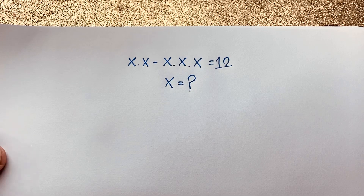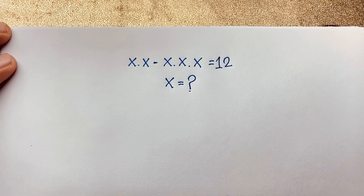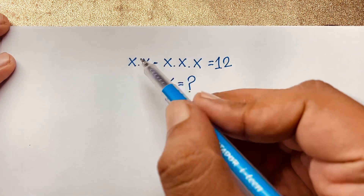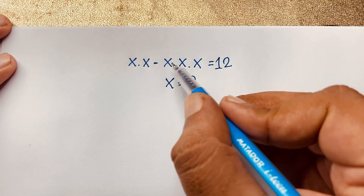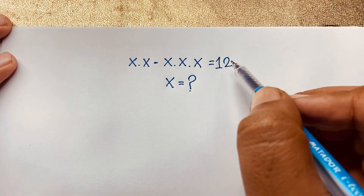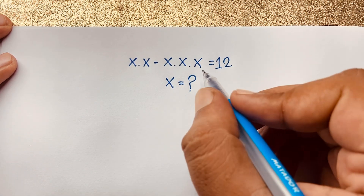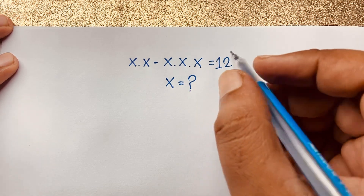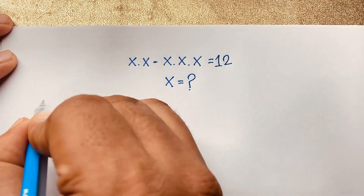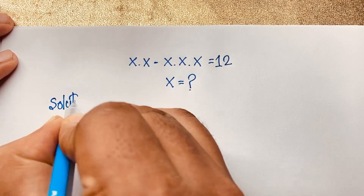Hello everyone, welcome to Russia's Classroom. Today we solve an interesting viral math problem: x times x minus x times x times x is equal to 12. What is x equal to? How do we solve this interesting math problem? I will solve this question using an easy method.